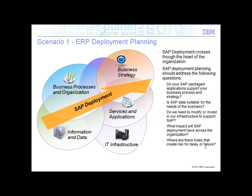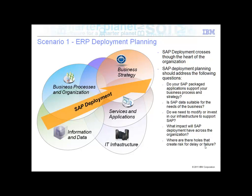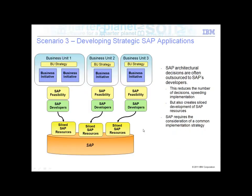Having a holistic view of where the SAP systems sit and support each one of these areas delivers the key capabilities the business requires. Consolidation planning starts by looking at what we have today, what we need to use, what is being overlapped, and therefore whether we can identify any reuse and remove duplication. Scenario three considers developing strategic SAP applications — it's often the case that SAP architectural decisions are, by default, outsourced to the SAP developers, which reduces decisions needed and speeds up implementation, but creates siloed developments. Really, for a complete SAP system, we should be looking at a common implementation strategy.